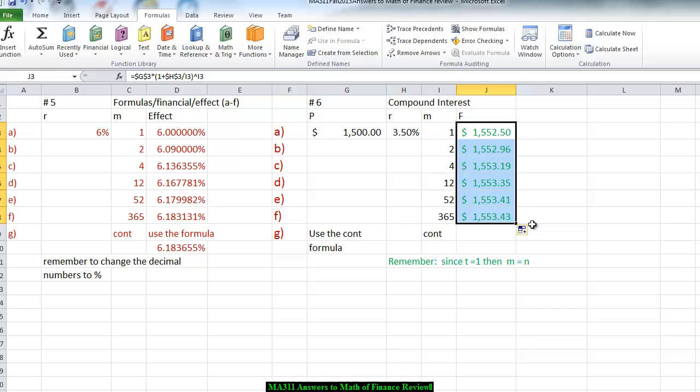Again, we can copy this information, and you will notice if we go to daily, we have the $1,500 times 1 plus the 3.5%, divided by 365 to the 365 exponent, and that will give us that information.